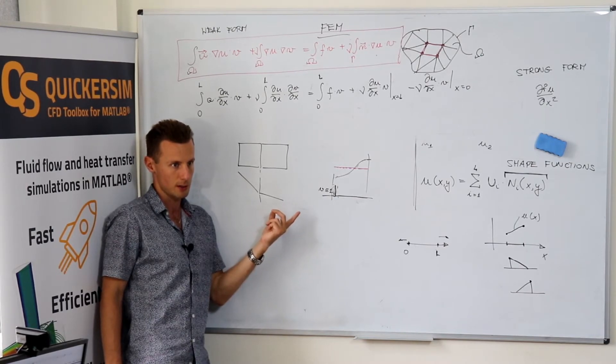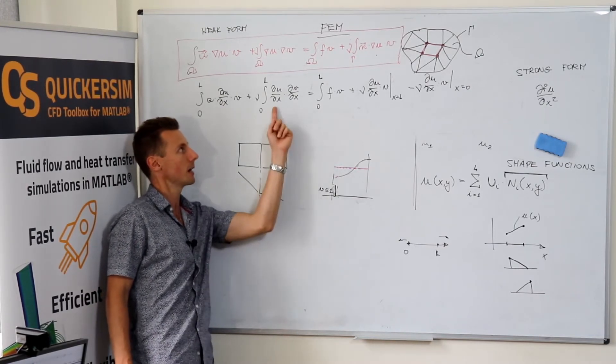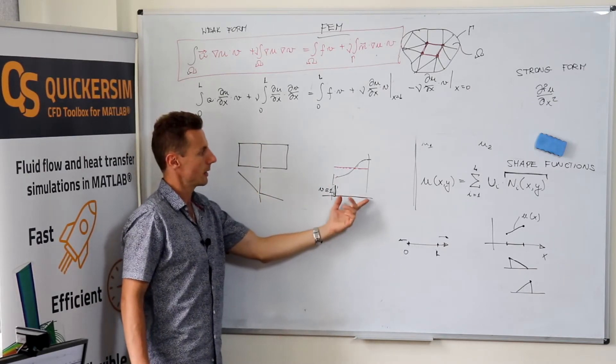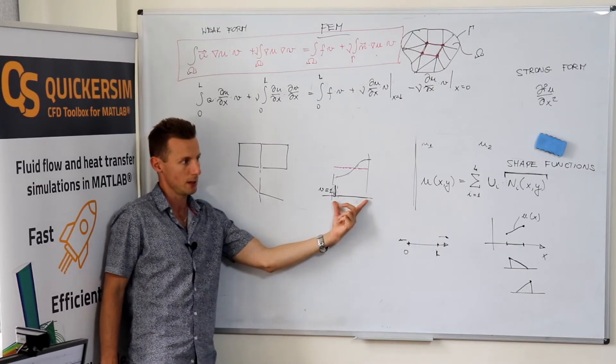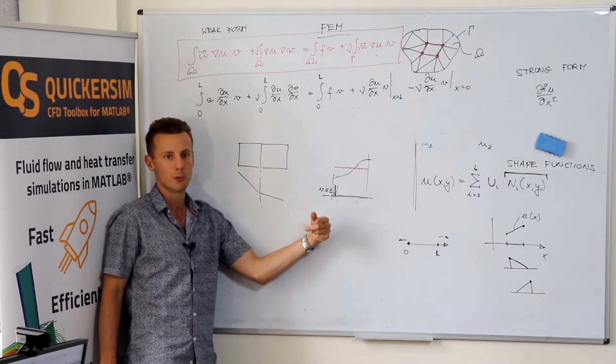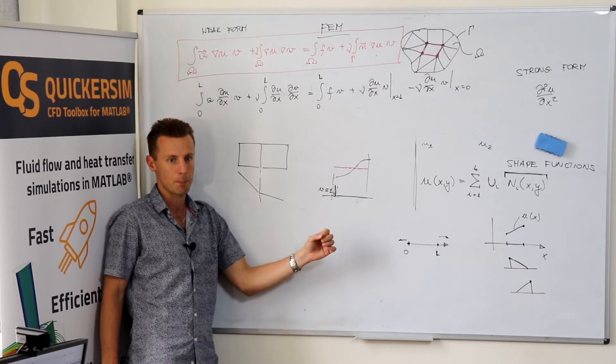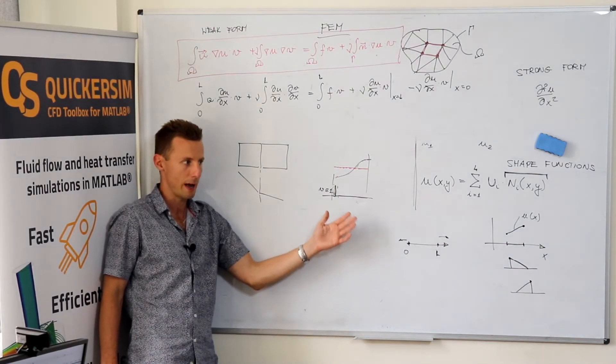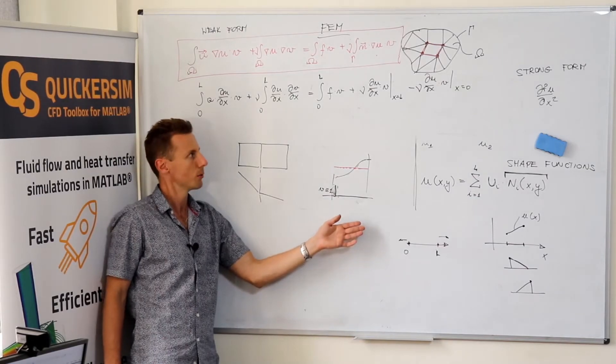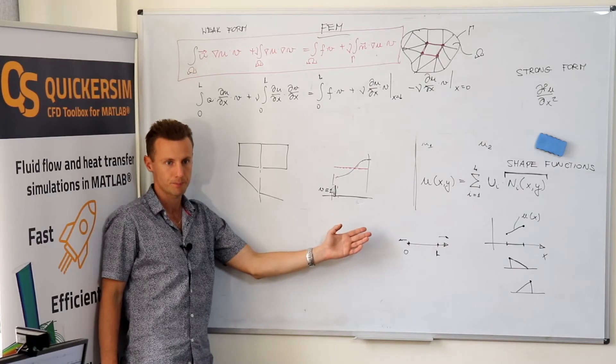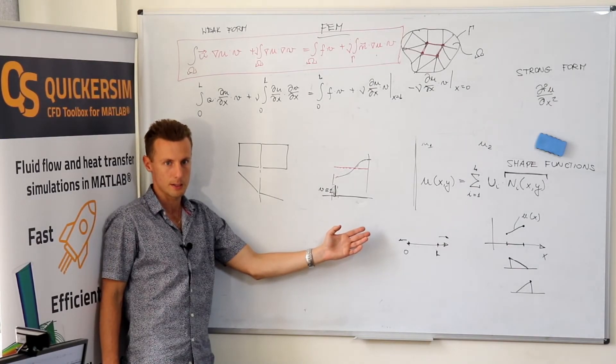So the weak formulation is you require less from your functions and you define the equality by the product of two functions integrated over the whole domain, but you require this to be fulfilled for every function from some function space that you select. Is it clear? Questions.